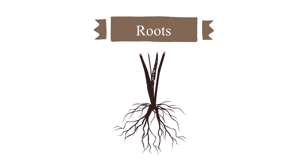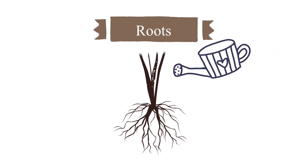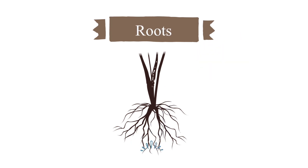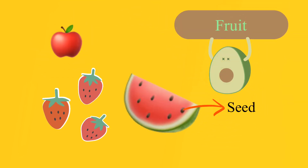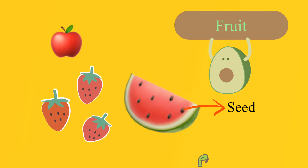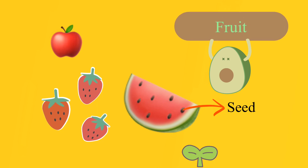The roots are found inside the ground. They help anchor the plant to the soil so that the plant doesn't fly away with the wind. Roots also absorb water and other nutrients from the soil.